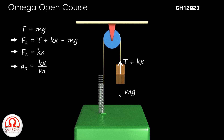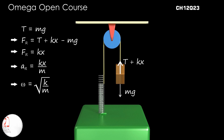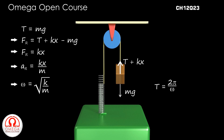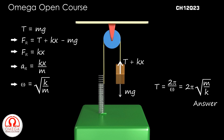Dividing by mass, we get the restoring acceleration is equal to kx/m. Hence the angular frequency is the square root of k/m. The time period is given by 2π/ω, or 2π times the square root of m/k. This is our answer.